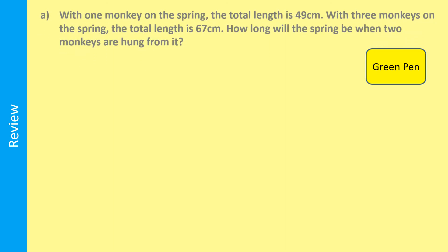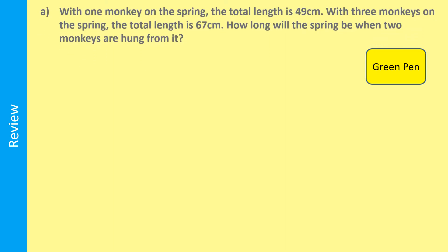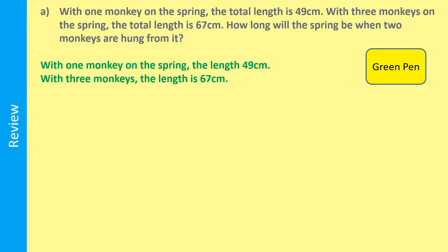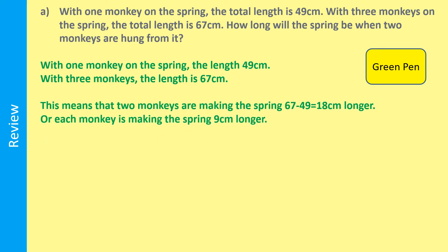Don't be put off by the large amount of writing. Let's do the question one part at a time. Part A: with one monkey on the spring the total length is 49 centimetres; with three monkeys on the spring the total length is 67 centimetres. How long will the spring be when two monkeys are hung from it? To start with, we know with one monkey the length is 49 cm and with three monkeys the length is 67 cm.